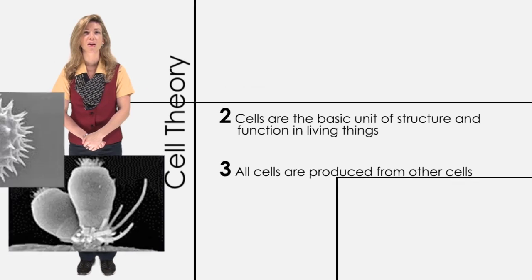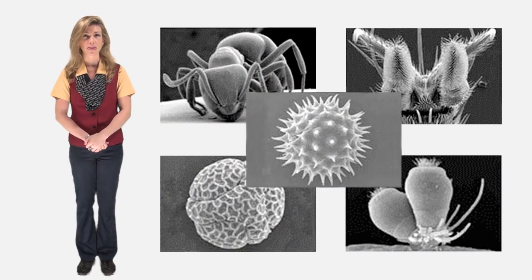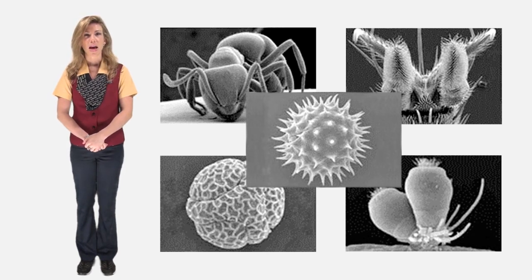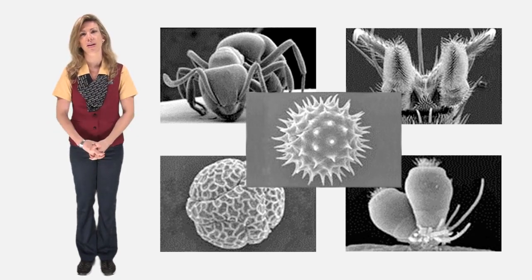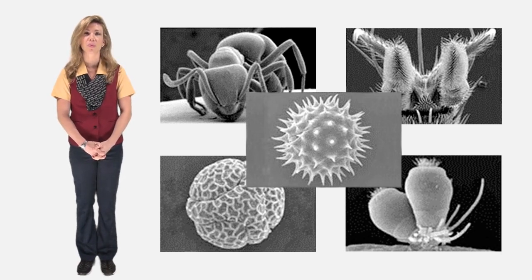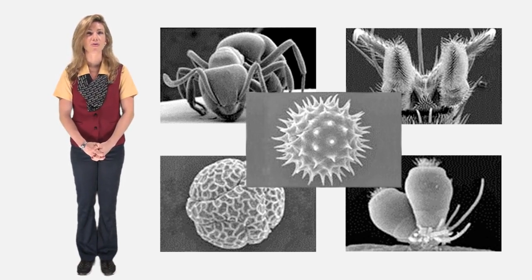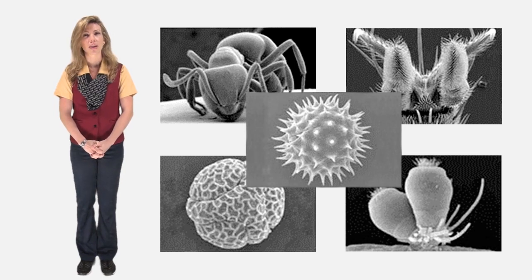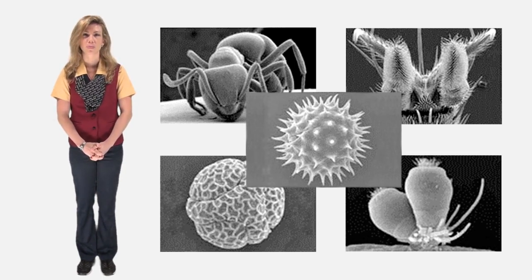Because cells are common to all living things, cells can provide clues about the functions that living things perform. And because all cells come from other cells, scientists can study them to learn about growth and reproduction. Cell theory holds true for all living things, no matter how big or how small.